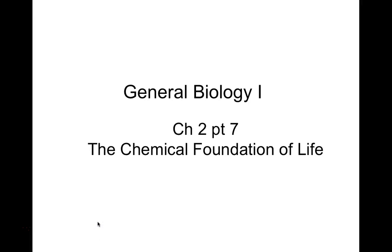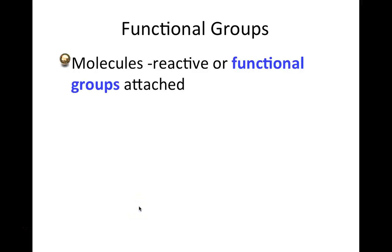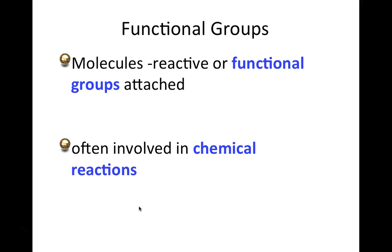Chemical Foundation of Life, Chapter 2 Part 7: Functional groups. Functional groups are very important for the macromolecules that we find in organisms. These are the points — the places on a molecule or macromolecule that will interact with another molecule. Molecules in biological systems are reactive or interactive, and it's the functional groups attached at those key locations on the macromolecule that are responsible for those interactions.